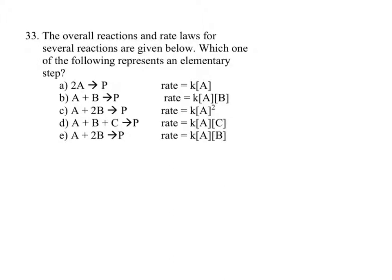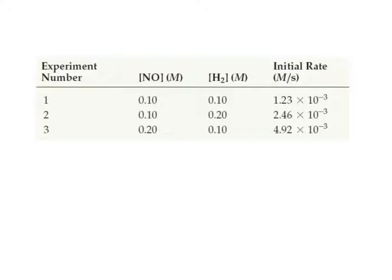Today we're going to take a quick look at how to handle mechanisms and determining the rate law given a mechanism in the kinetics chapter. Previously I said that a rate law and the orders of the different reactants have to be determined experimentally — meaning you might have data showing initial reactant amounts and initial rates recorded across experiments, and you'd have to determine the rate law. I have a previous video on how to do that which you can reference if needed.